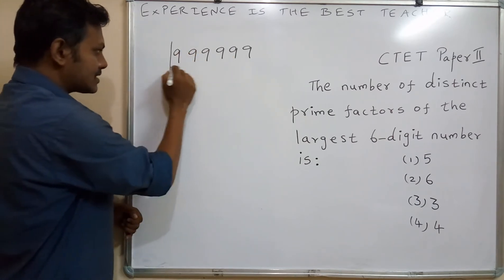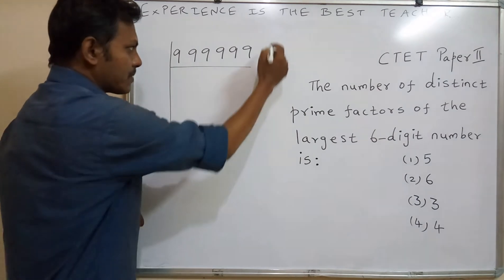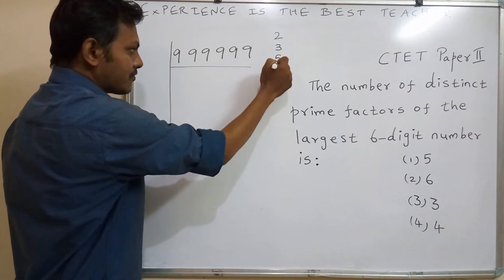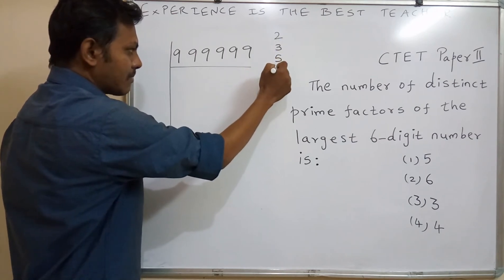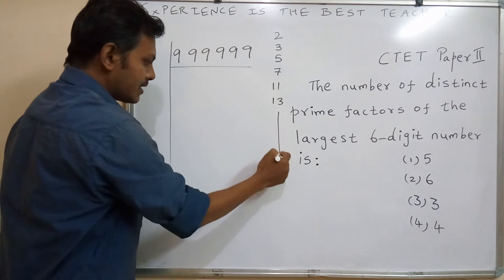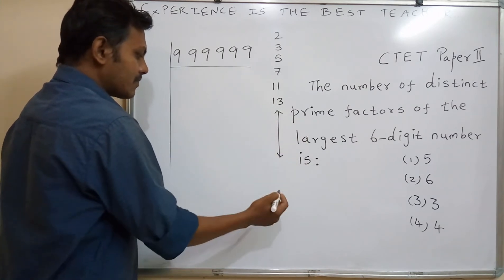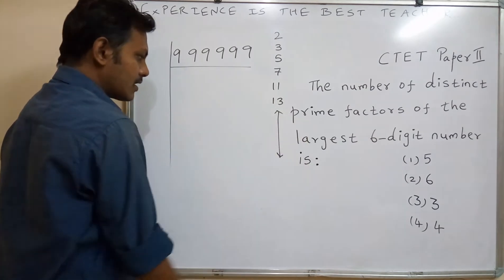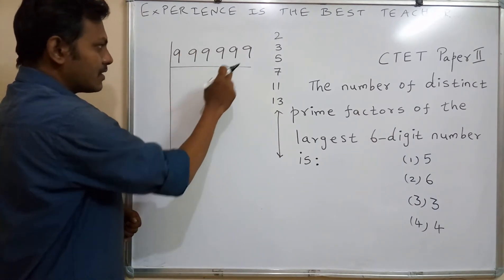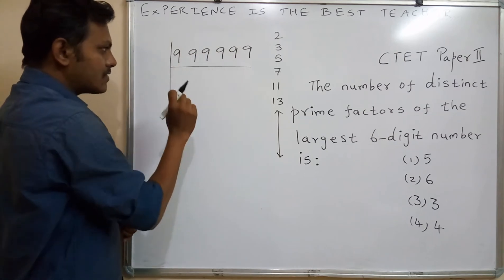The prime factors of 9,99,999 we are going to find out. The smallest prime numbers are 2, 3, 5, 7, 11, 13 — there are 25 prime numbers up to 100. We cannot use the 2 table here because this number is not divisible by 2.